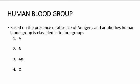Now we move on to different types of blood groups in humans. Based on the presence or absence of antigens and antibodies, human blood is classified into four groups: A, B, AB and O. An individual has one of these four blood groups.